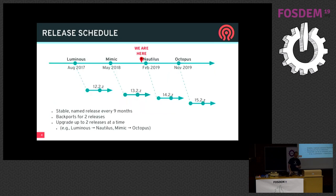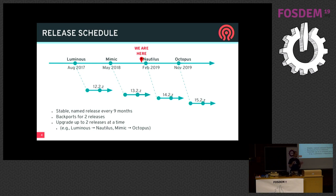Ceph is an open source upstream project. We release every nine months, and every release is named after a species of cephalopod. Nautilus is the next release, coming out at the end of February, and the one after that is Octopus, about nine months later. The features I'm going to be talking about today are a mix of what exists in Nautilus and previously, and also things we're planning and going to be building after that.